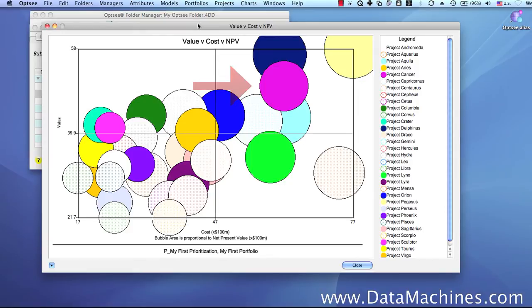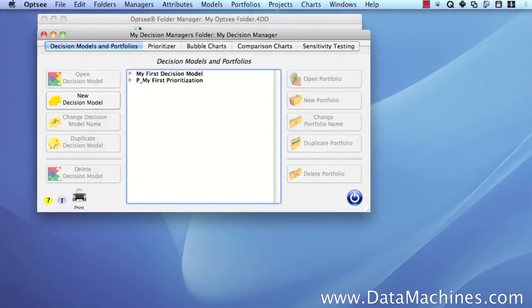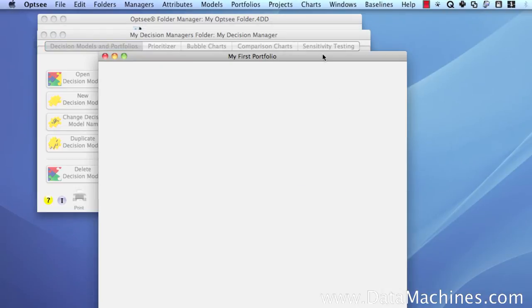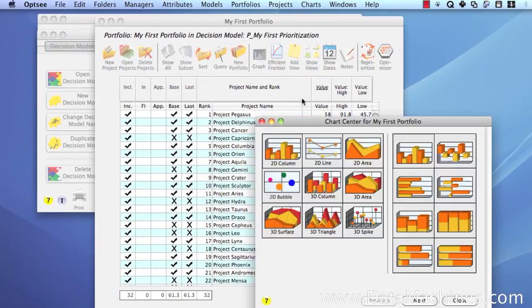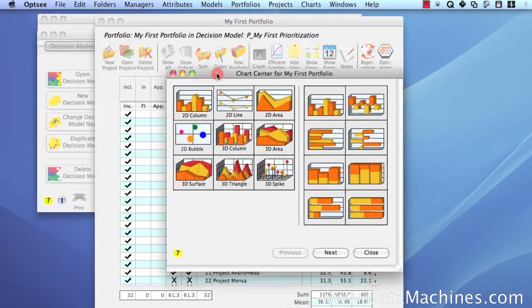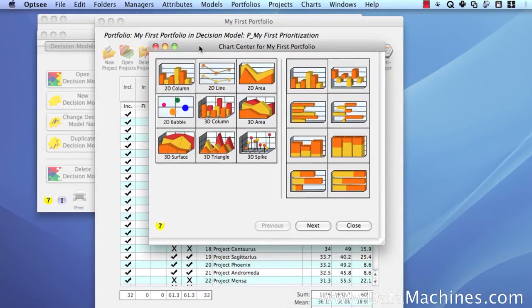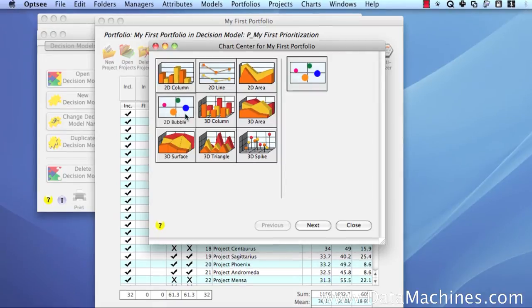There are two starting points for bubble charts in OPSEE. The first one is from the portfolio form itself, so we can open the portfolio form here and click on the charts button at the top of the form to open the charts form. This is the form that you can use to make a variety of useful charts. We're going to select the bubble chart button and then click next to open the bubble chart form.